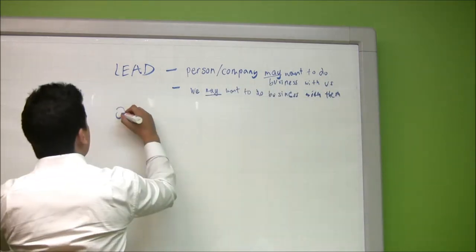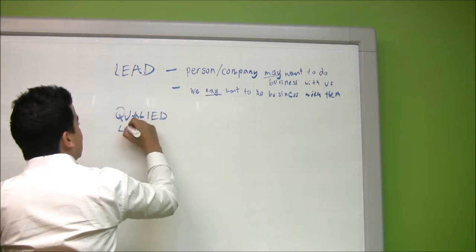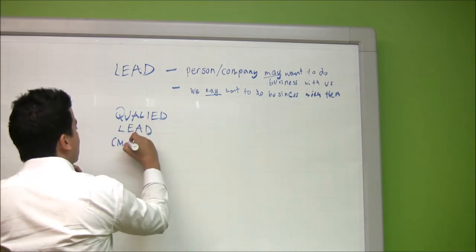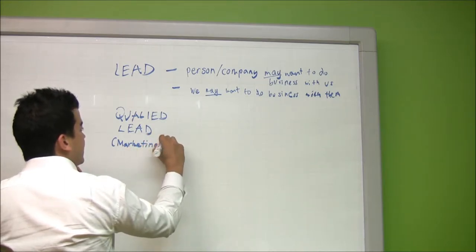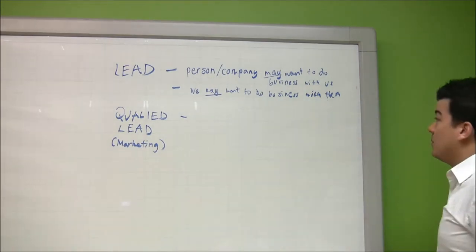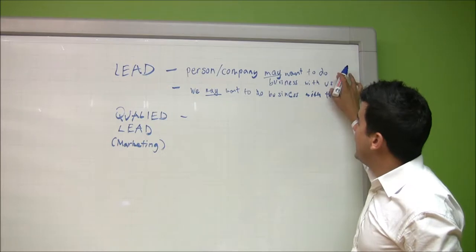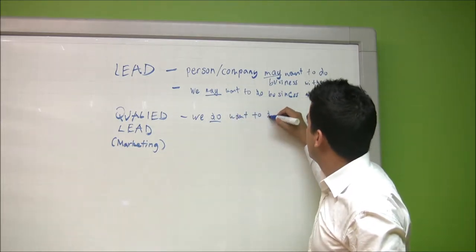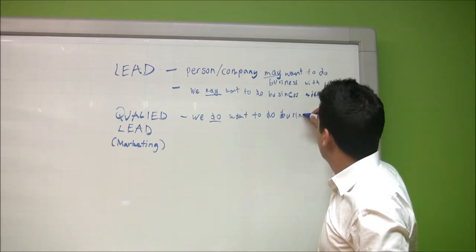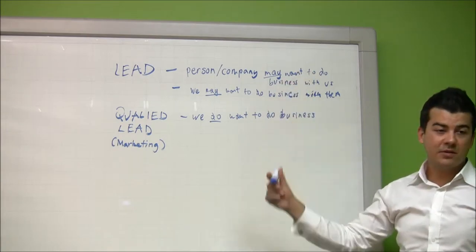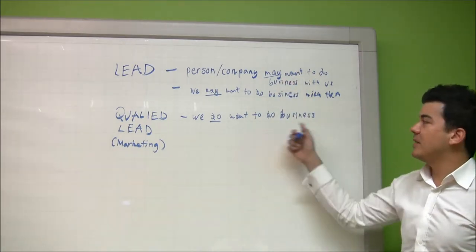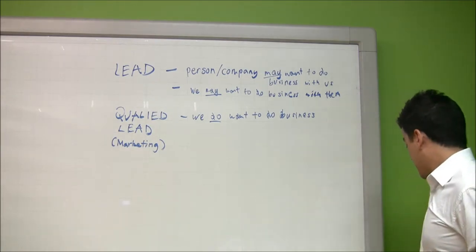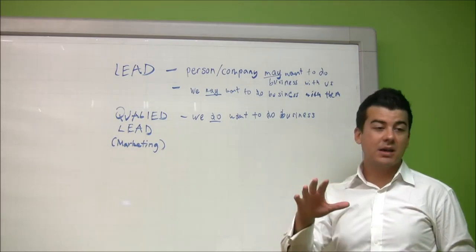Now, the difference between a lead and a qualified lead. When it's qualified — what's the definition of a qualified lead? When we talk about a qualified lead in this respect, it's qualified by marketing, as opposed to qualified by a salesperson. In terms of a qualified lead, it's a lead where we do want to do business with them. They still don't know if they want to do business with us — they won't know until they sign a contract. But we definitely want to do business with them. That's where we get into the minimum cutoff points — our target markets and the minimum cutoff.